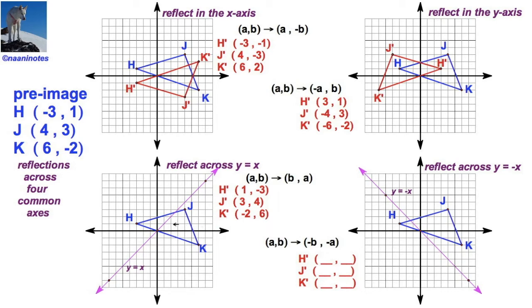Okay. Let's plot those. Negative 1, 3. Whoa, I almost fell for that one. I'm sorry. 1, negative 3. A little backwards there. 3, 4 for j-prime. And for k-prime, negative 2, positive 6.